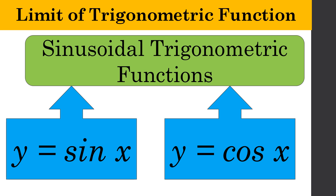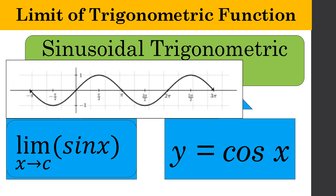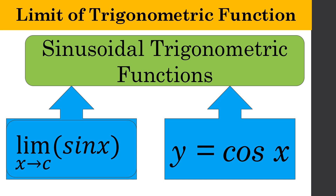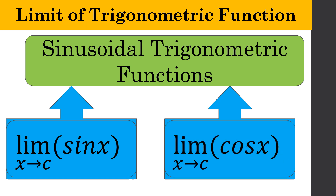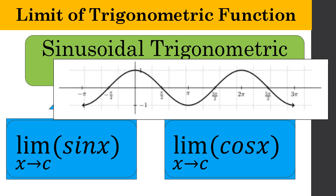The graphs of both functions are continuous — they are uninterrupted. Like the graphs of polynomial functions, their domain includes all real numbers. The domain of sine x and cosine x are all real numbers. Therefore, like polynomial functions, the limit of sine x and cosine x as x approaches a certain real number can be evaluated using direct substitution.